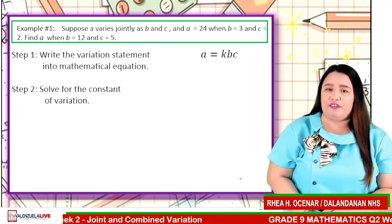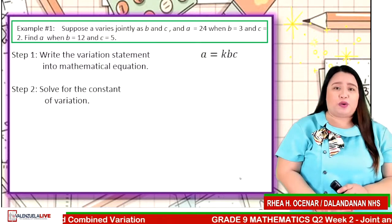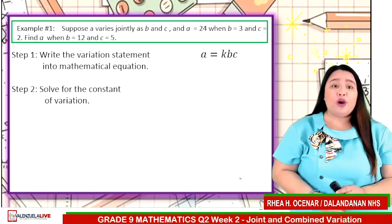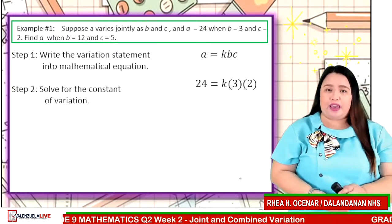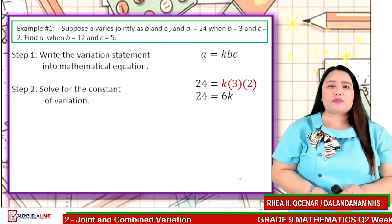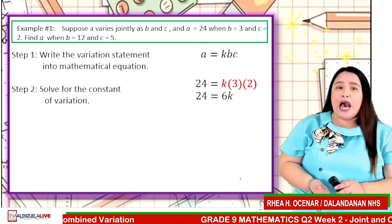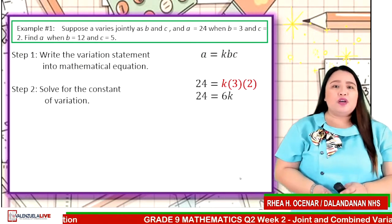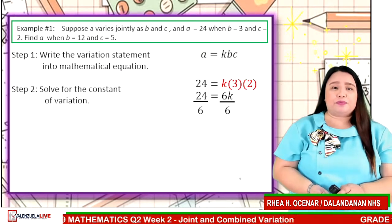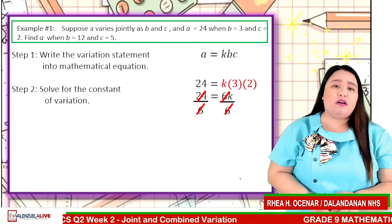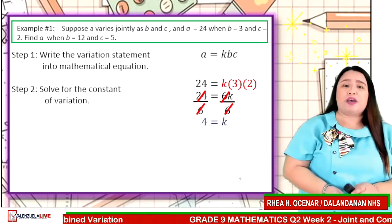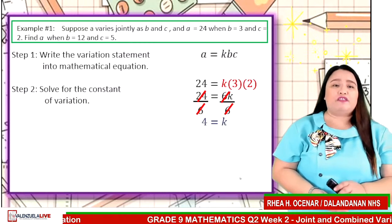Step two: solve for the constant of variation. We will use the value of A is 24 when B is 3 and C is 2. By substitution, we have 24 is equal to k times 3 times 2. Simplifying, we have 24 is equal to 6k. Applying the multiplication property of equality using multiplicative inverse, we multiply both sides by 1 over 6. We have 24 over 6 is equal to 6k over 6. Simplifying, we have k is equal to 4. So our constant of variation is 4.